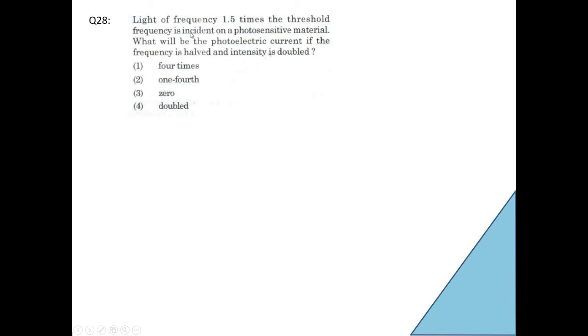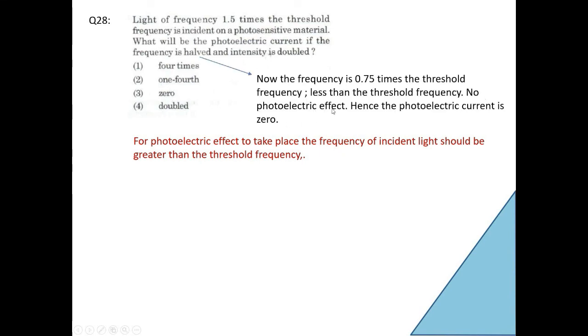We will go to the next one. Light of frequency 1.5 times the threshold frequency is incident on a photosensitive material. What will be the photoelectric current if the frequency is halved and intensity is doubled? Option 1, four times; option 2, one fourth; option 3, zero; option 4, doubled. So you should know what is this. For photoelectric effect to take place, the frequency of the incident light should be greater than the threshold frequency. That is important. See initially frequency is 1.5 times threshold frequency. So photoelectric current would be available. But you see later on frequency is halved. From 1.5 times it is halved. And halved means half of this. 0.75 times threshold frequency. 0.75 times. Because it is halved. No photoelectric effect will take place. Because it is less than threshold frequency. Hence the photoelectric current is zero. So what should be the answer? Zero. Because he is asking what will be the photoelectric current?